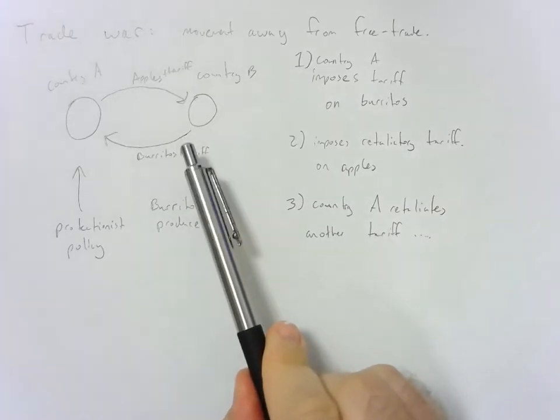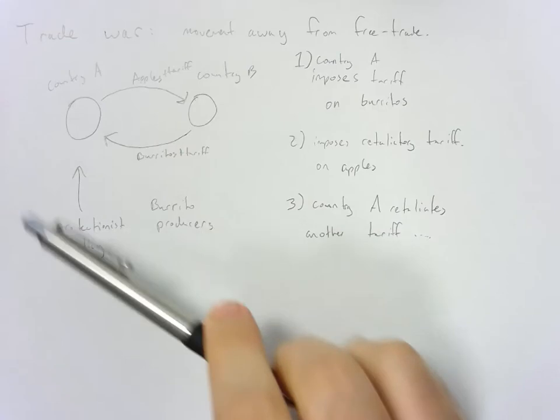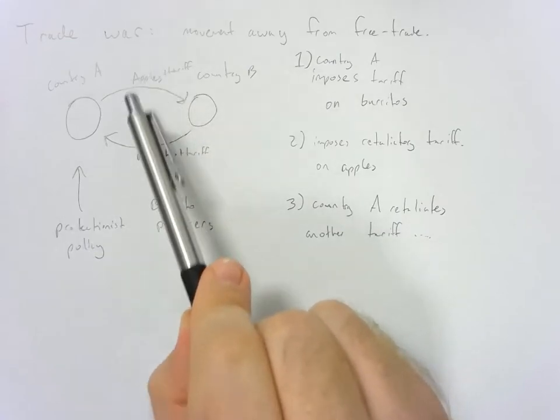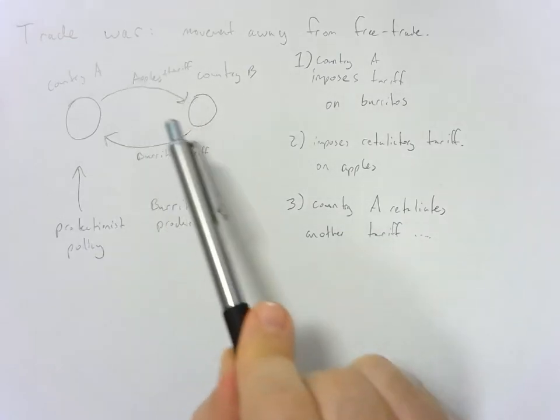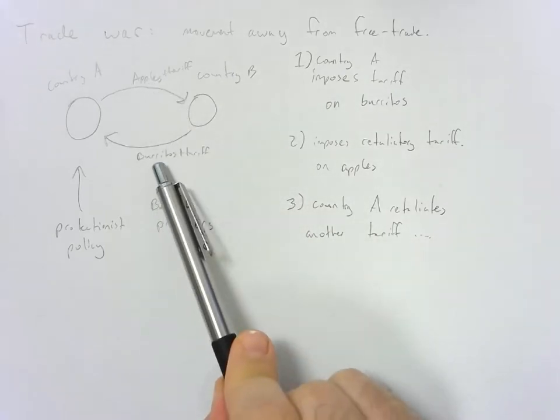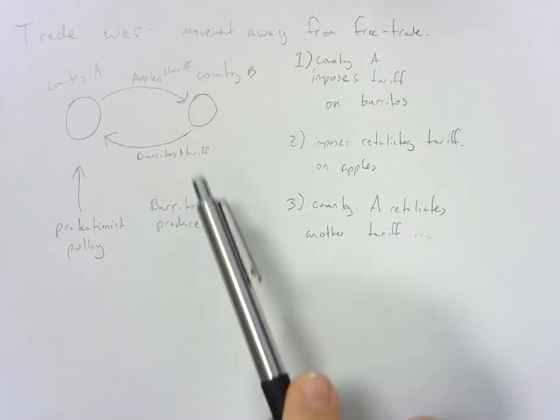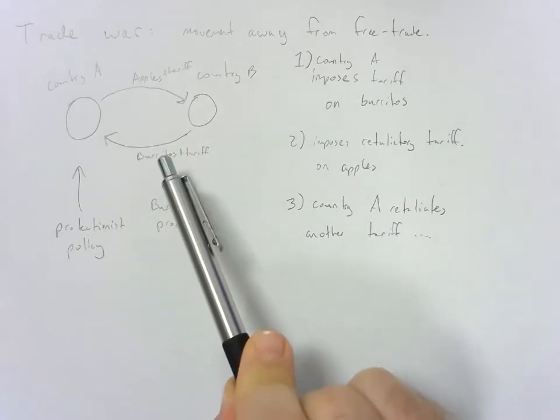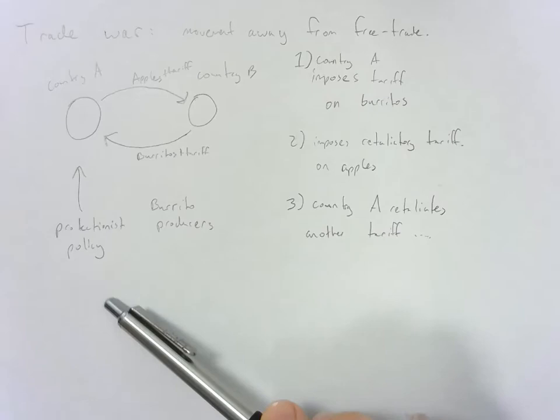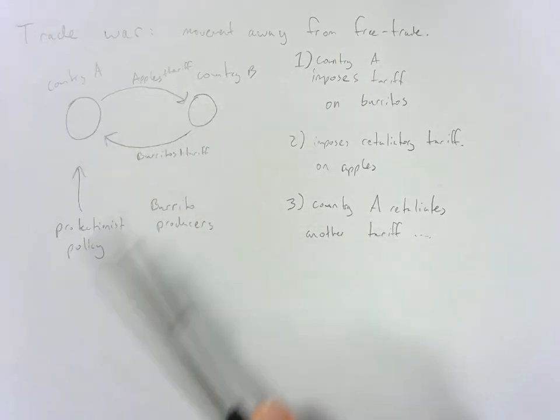So you can imagine that the world isn't this cut and dry or clear cut. Instead of just apples, it could be apples and oranges and soy and corn and papayas and mangoes and whatever, and instead of just burritos, you could have tacos, hamburgers, movies, Harley Davidson motorcycles, etc. It could be all sorts of different things. And so the countries just go back and forth slapping these tariffs on each other, and all of a sudden you have a trade war.